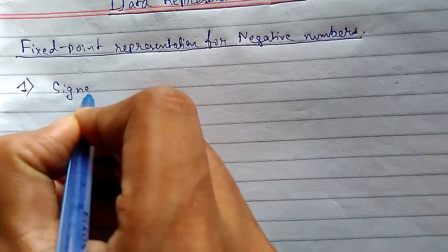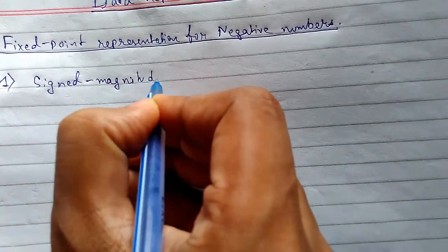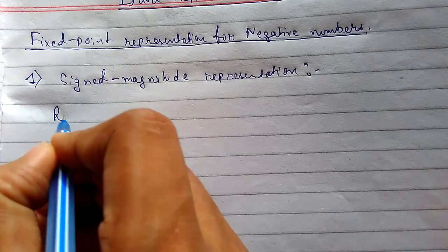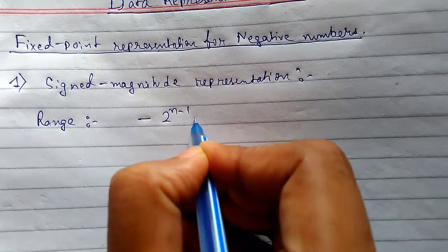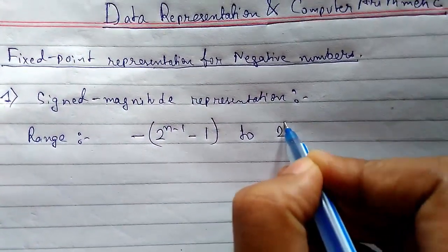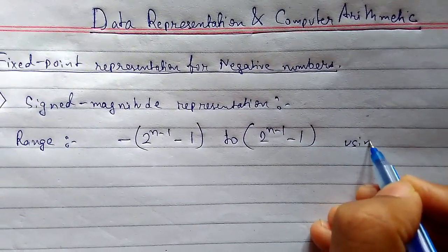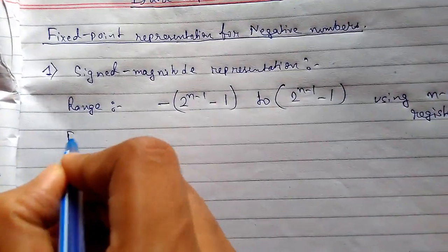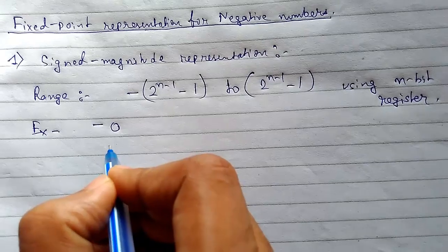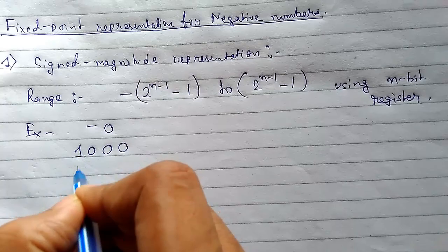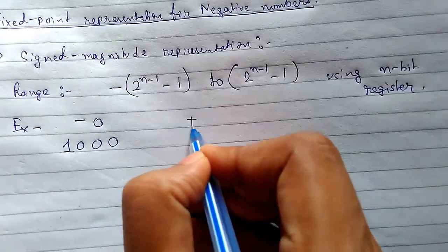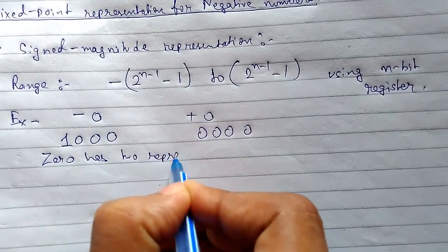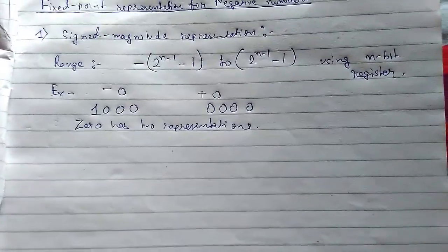First, we will see signed magnitude representation. The range is from minus 2 to the power n minus 1, minus 1, up to 2 to the power n minus 1, using an n-bit integer register. For example, minus 0 in 4 bits has the MSB or sign part as 1, giving 1 0 0 0, while plus 0 is 0 0 0 0. So zero has two representations in signed magnitude.